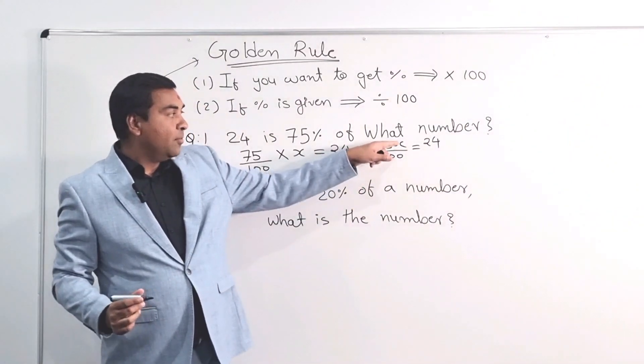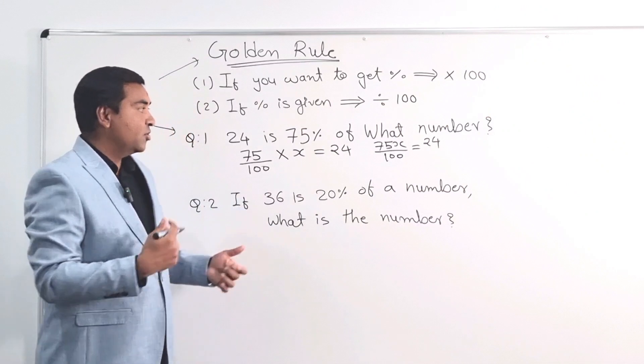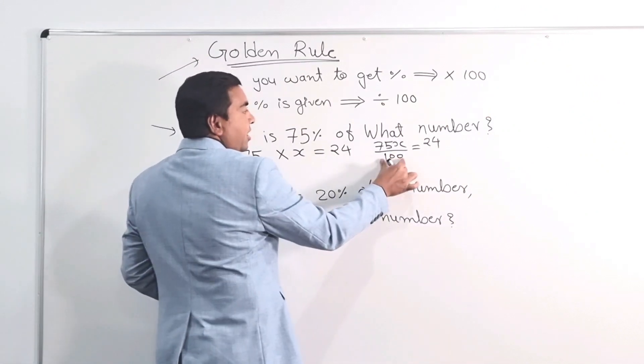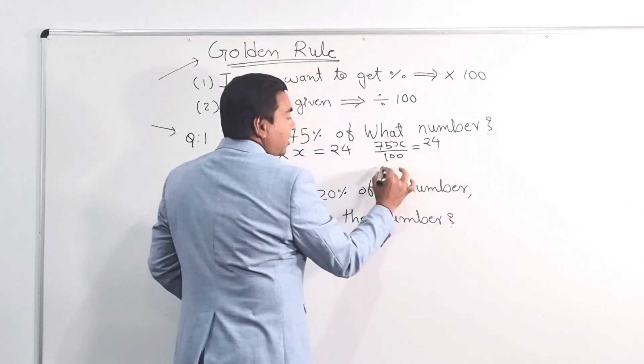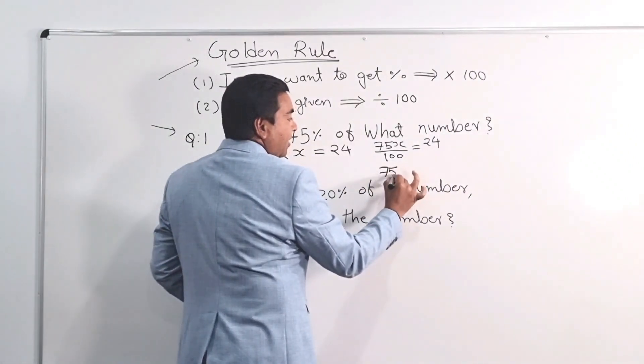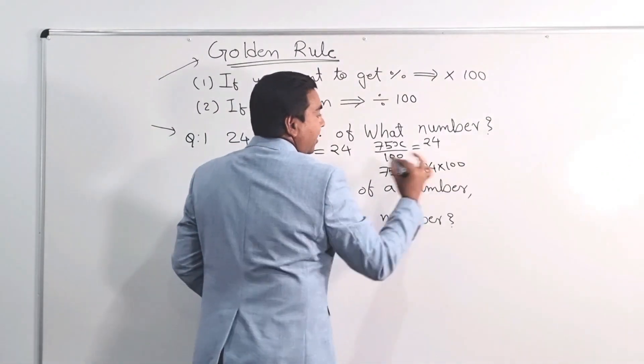Now, I'm going to get my X because X is the number. So I'm going to make my X by itself. So the very first thing is, 100 is divided by, thereby it will go into times. So 75X is going to be 24 multiplied by 100.